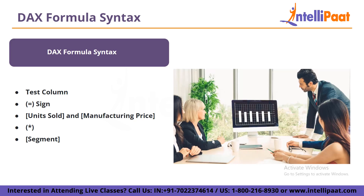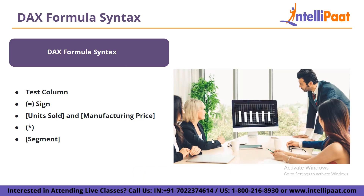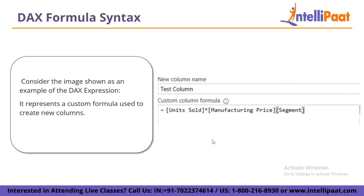Let's break it down. First we have the test column — the name of the new measure. Then we have the equals sign which indicates the starting of your DAX formula. Then we have unit sold and manufacturing price, and the star operator which acts like a multiplier. Then we have the segment. So: test column means name of the new measure; equals sign indicates the start of the DAX formula; bracket unit solds and manufacturing price are the two arguments or columns whose values are used to generate the output; the star operator multiplies the values of the two column variables; and segment represents the classification of the corresponding formula. The calculated columns are necessary to have at least one. So you can see the test column, then the custom column formula where it equals units sold multiplied by manufacturing price into segment.